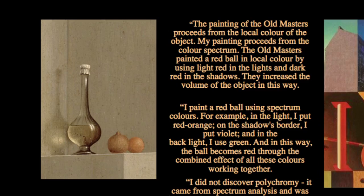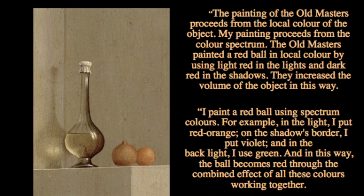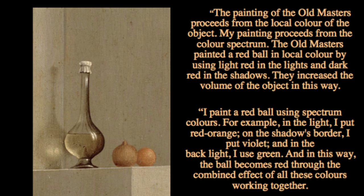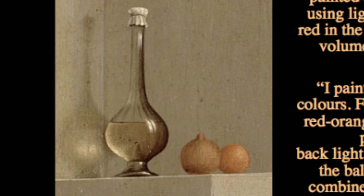Hausner writes: The painting of the Old Masters proceeds from the local color of the object. My painting proceeds from the color spectrum. The Old Masters painted a red ball in local color by using light red in the lights, dark red in the shadows, and they increased the volume of the object in that way. In a painting by van der Weyden, one of the Old Masters, you have dark and light reds to make those spheres.